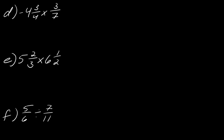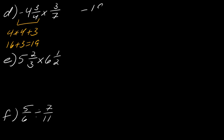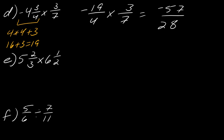Now we're moving into problems with mixed numbers. When you have a mixed number, you want to get in the habit of converting it into an improper fraction. For this first one, I take four times four plus three — remember you tack on the negative at the end and ignore it for now — so that's 16 plus three equals 19 as the numerator. This gives us negative 19 over four times three over seven. Multiplying across: 19 times three is negative 57, and the denominator is 28.